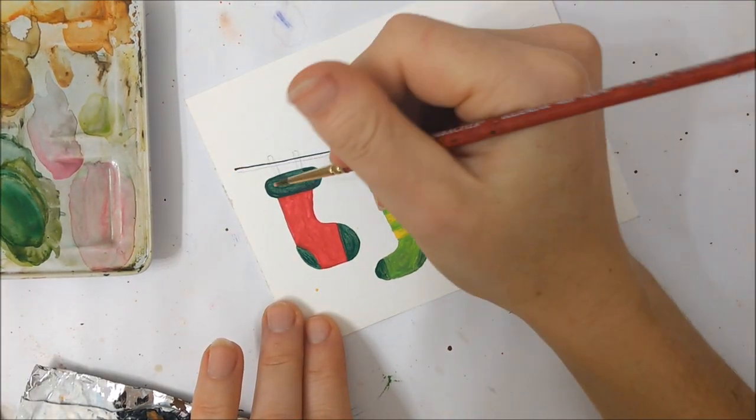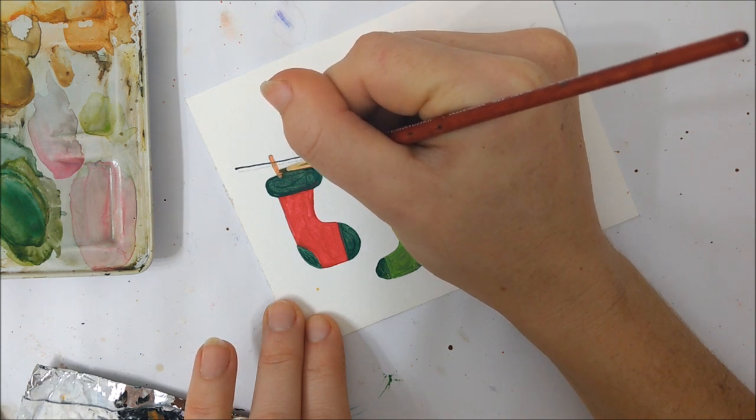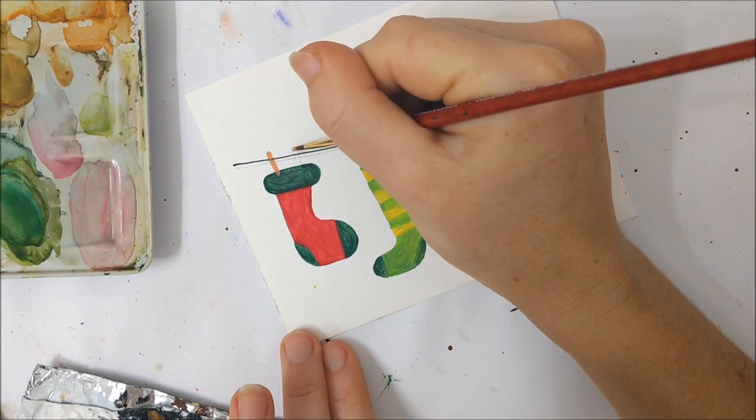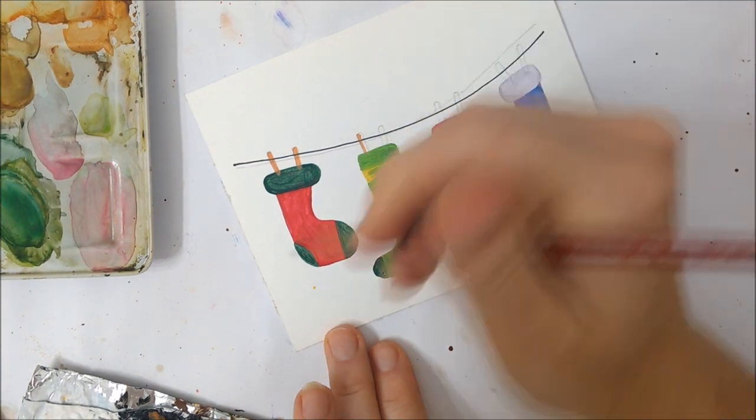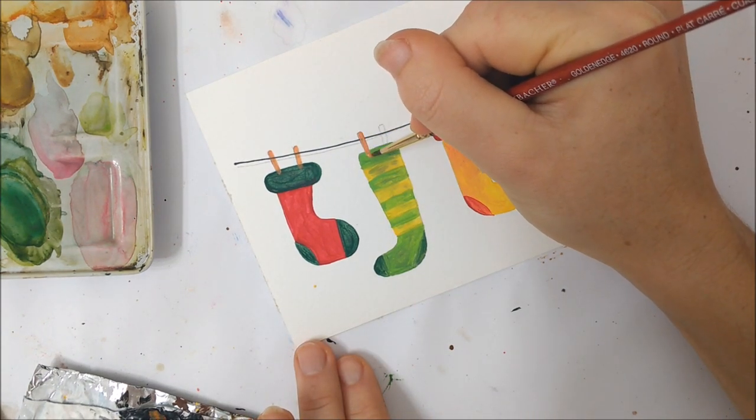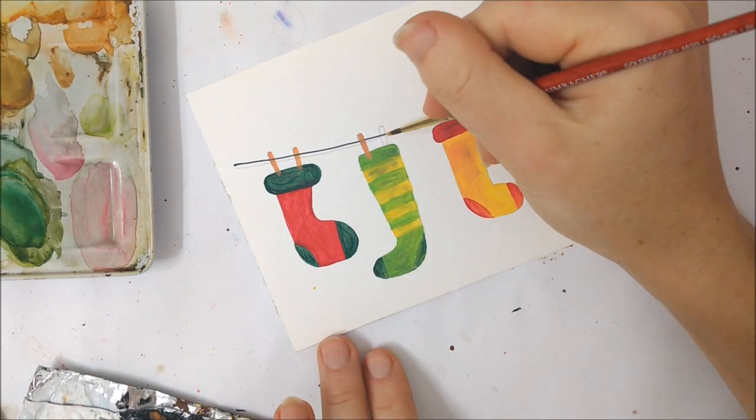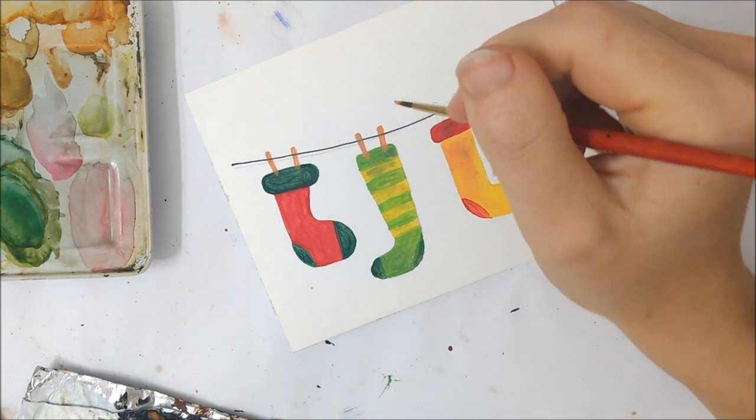With the yellow stocking, I painted it solid yellow and then painted over it with red acrylic paint. You'd probably actually get away with using watercolor as well just because red is darker than yellow so it would show through, but it wouldn't work on the dark greens, for example.